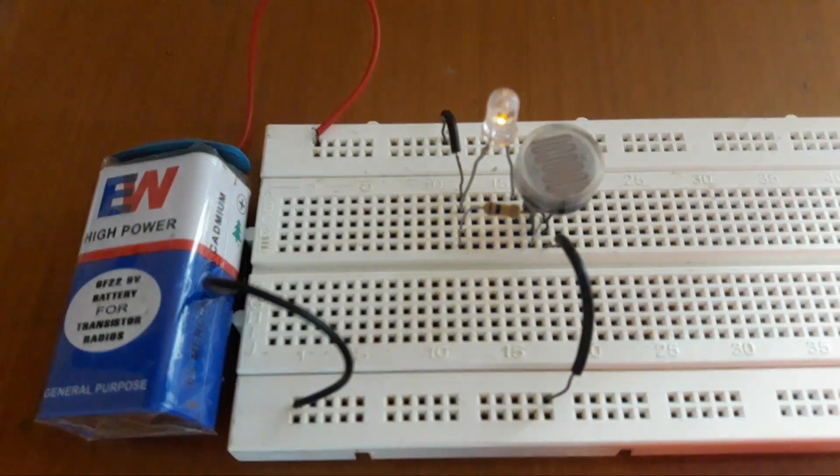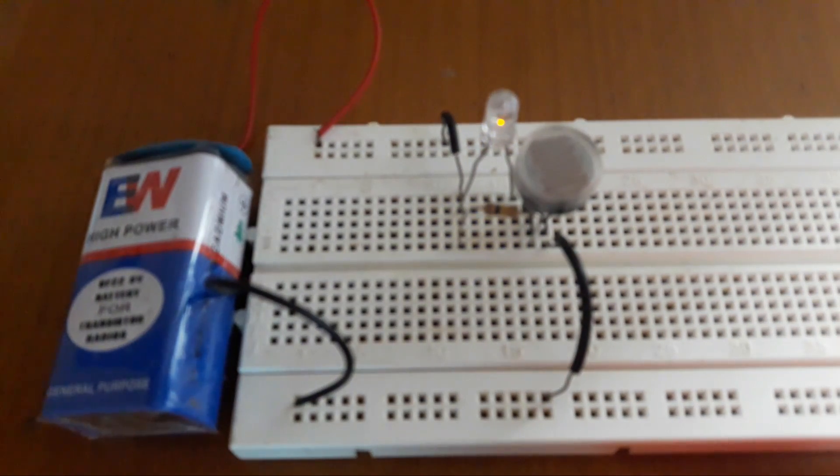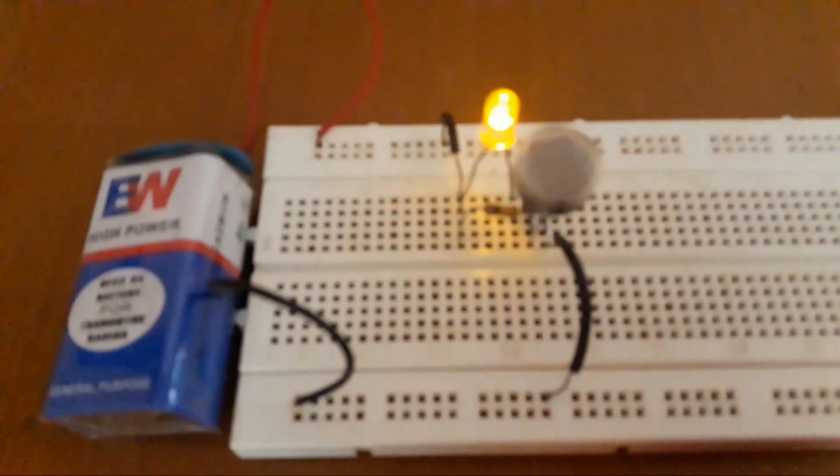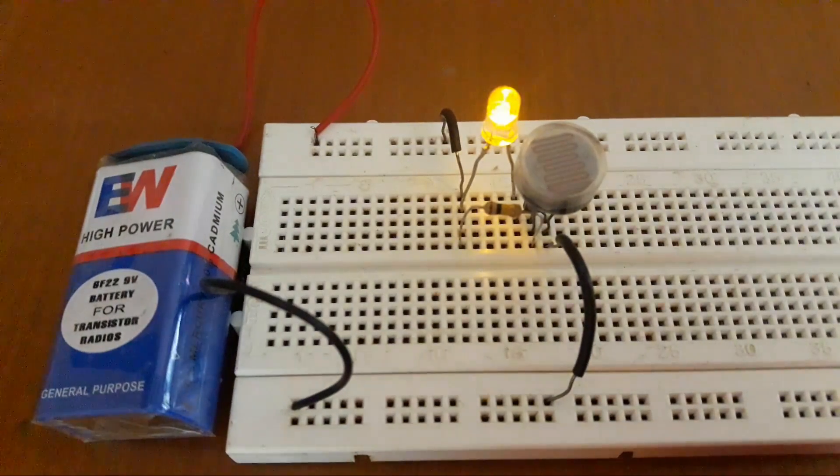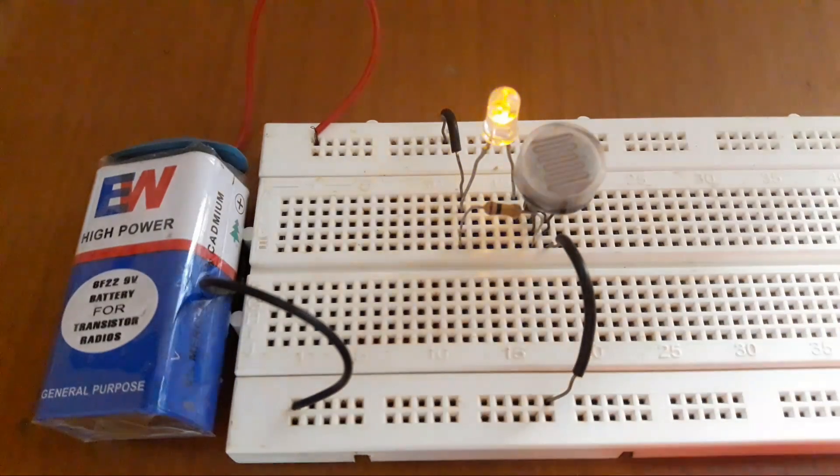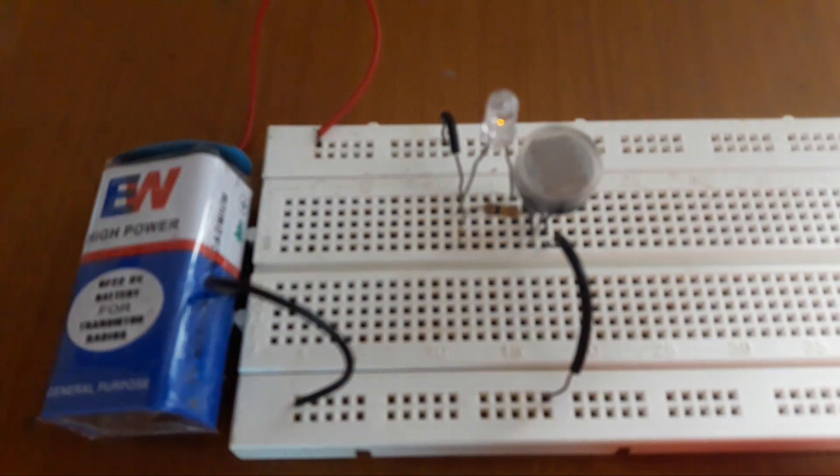This sensor can also be called an automatic street light. The street light will be activated after sunset, that is in darkness, and it will automatically go off during sunrise, that is when there's light.